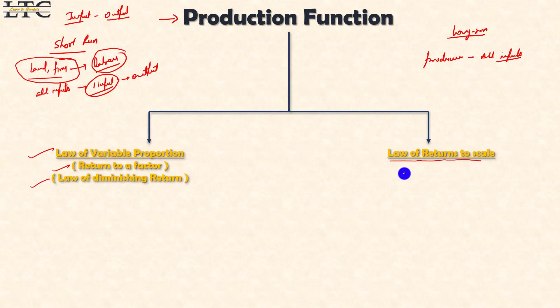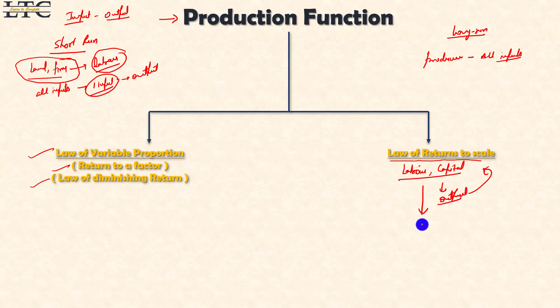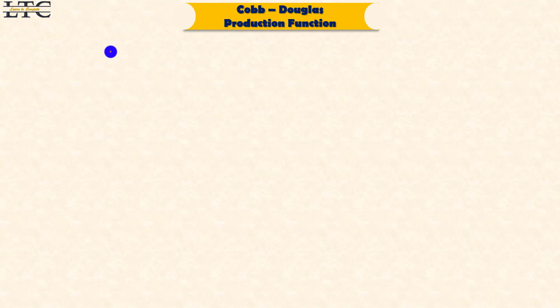We change all inputs — we take two inputs, labor and capital — and we change all inputs and check what happens to output. We study the law of return to scale. Cobb-Douglas also has a production function which is related to the long run, related to capital and labor and output. Before we study it, let's see what happens in GDP calculation.